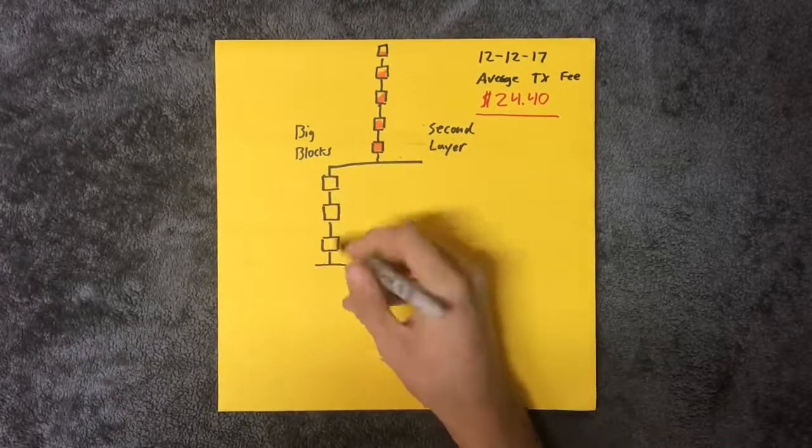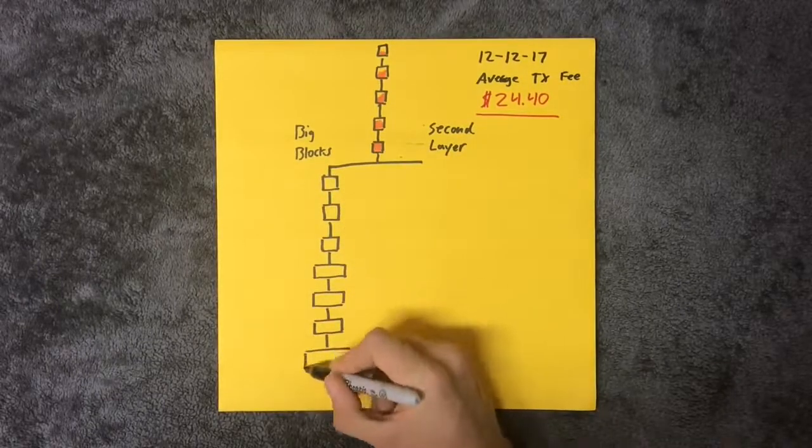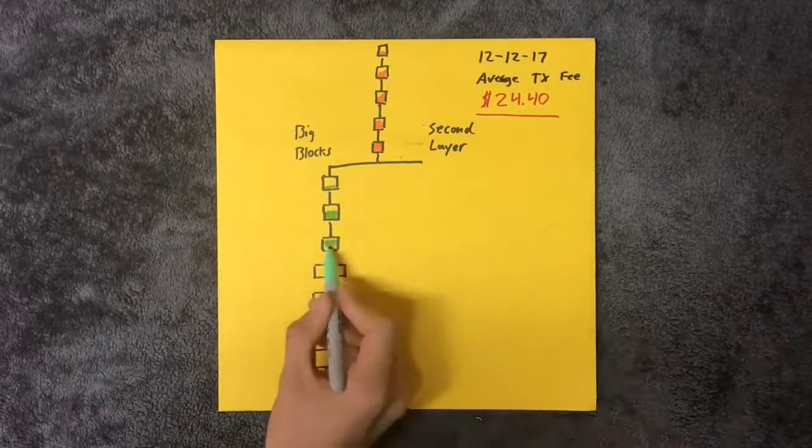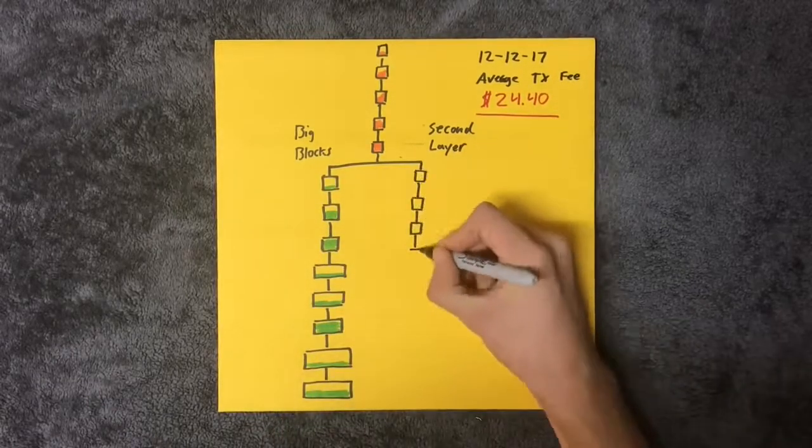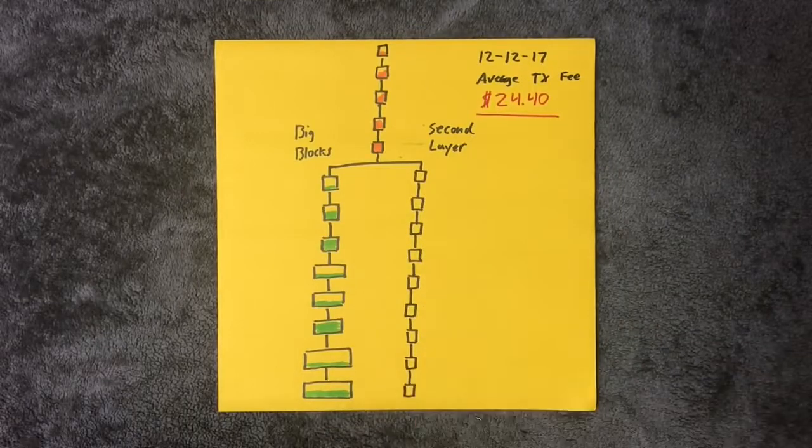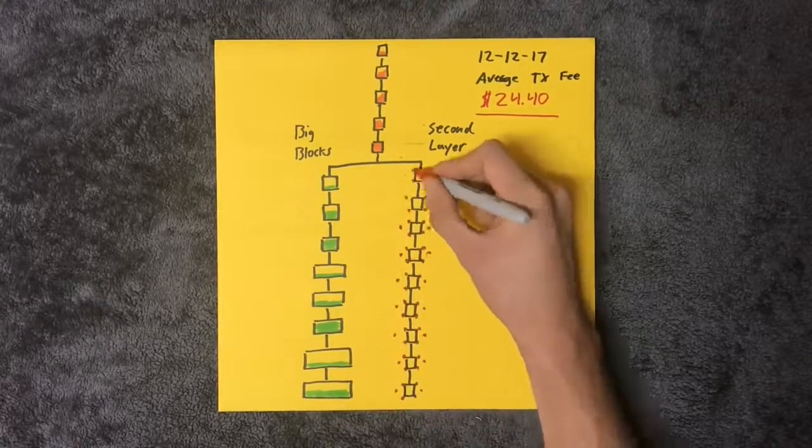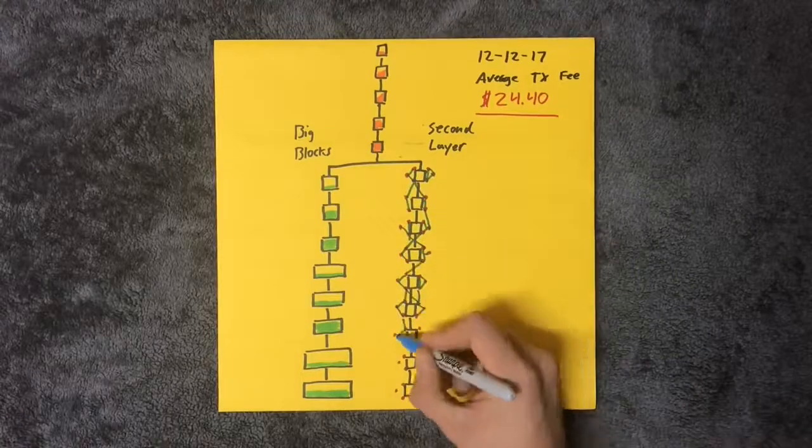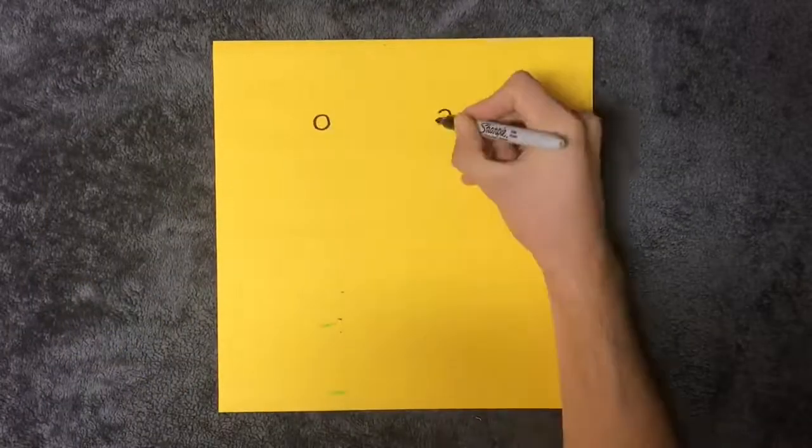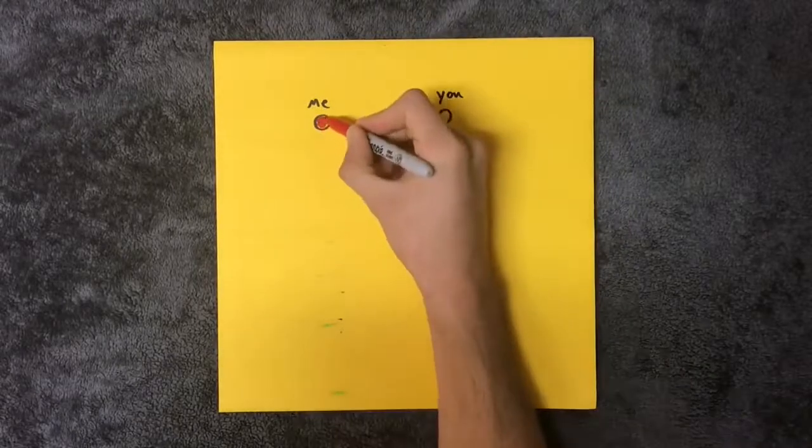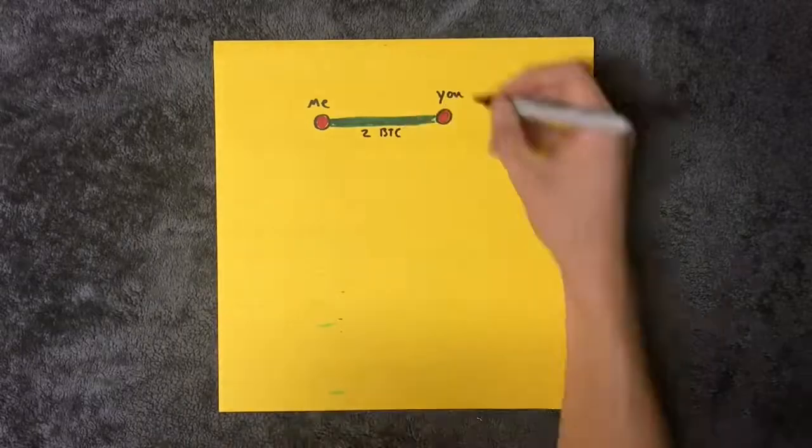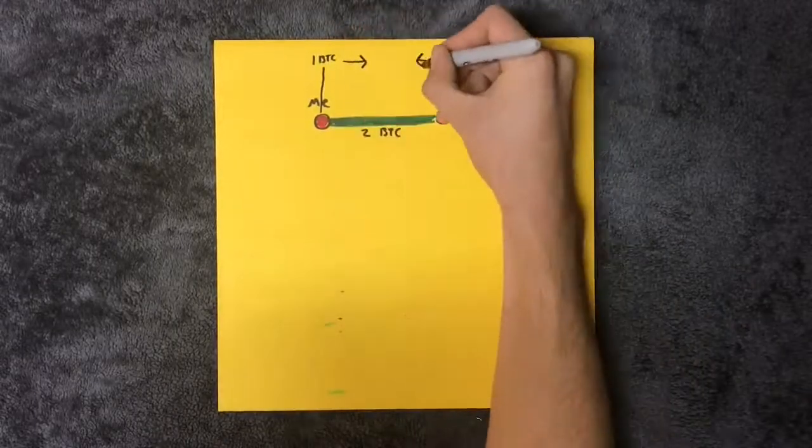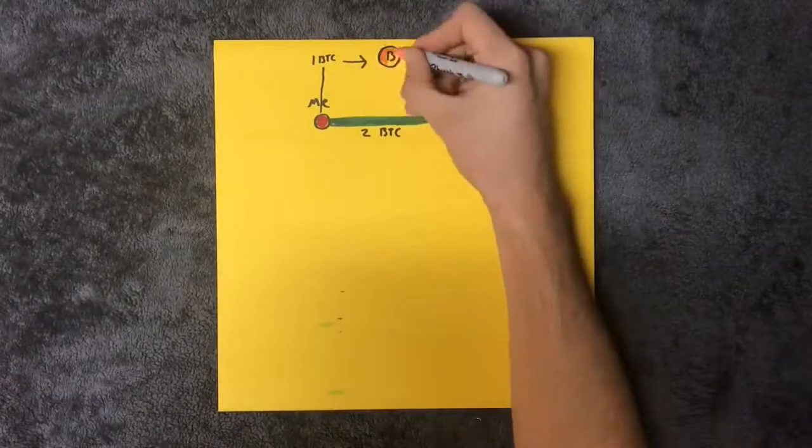This problem only gets worse with time as adoption spreads. Instead of raising the block size again, the development team has decided to go for a second layer called the Lightning Network. It promises instant transactions, super low fees. This is the basics of how it works: let's say me and you transact regularly, so we open a channel for two bitcoins. I send a Bitcoin and you send a Bitcoin to a multi-signature address where it's temporarily locked away.